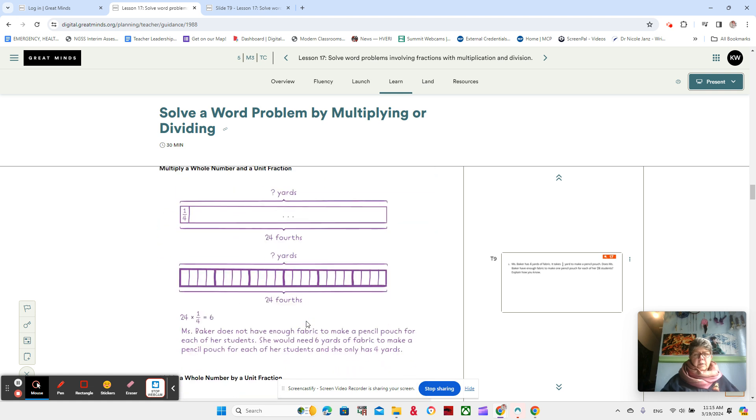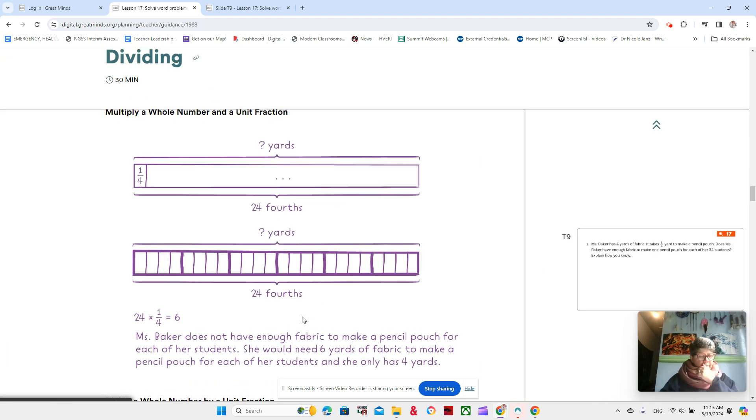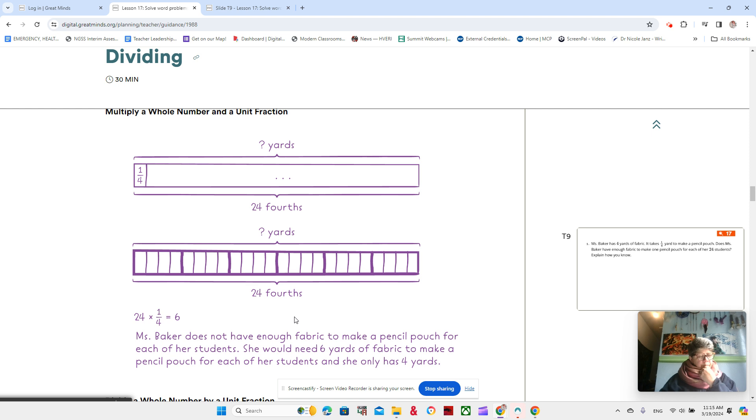In this example, very similar to what we did. In fact, that's exactly what we did. This is exactly what we did with the 24 fourths. But the four yards are not part of the story. But we don't need to have the four yards because we're showing that six yards is more than four yards and she needs six yards.